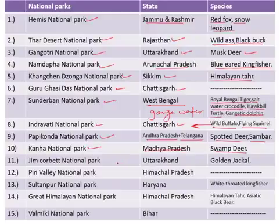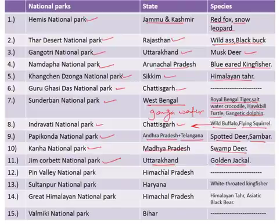Next is the Jim Corbett National Park, situated in the state of Uttarakhand, famous for the golden jackals. Pin Valley National Park is in the state of Himachal Pradesh. Sultanpur National Park is situated in the state of Haryana and is famous for the white-throated kingfisher.